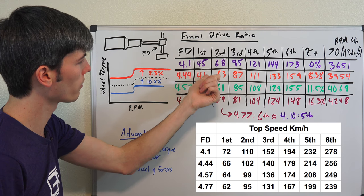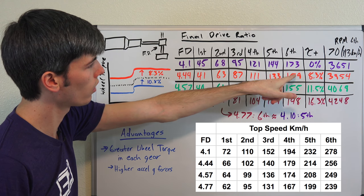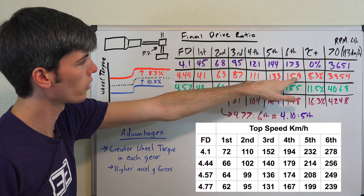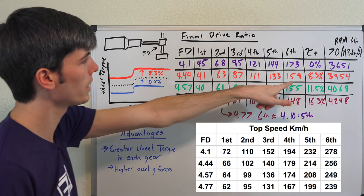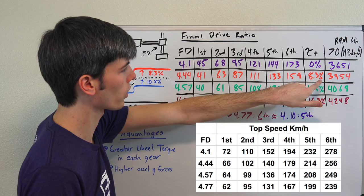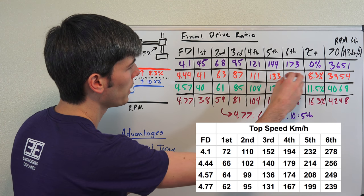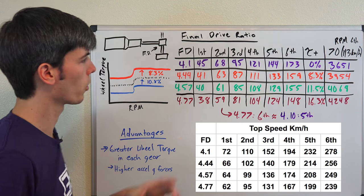So 1st is down from 45 to 41, your top speed overall is down from 173 down to 159. But what we've gained is an increase in wheel torque. So that's what we're sacrificing here is the top speed in order to gain wheel torque.